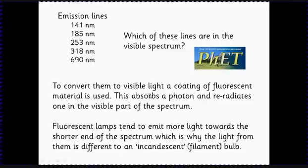What that powder does is it absorbs the ultraviolet photon and then re-radiates a photon that's in the visible part of the spectrum. Sometimes that does have an effect. The fluorescent lights tend to be a little bit different to what's called an incandescent bulb, a filament bulb that produces a full spectrum of radiation, whereas fluorescent lamps produce more light towards the shorter end of the spectrum.